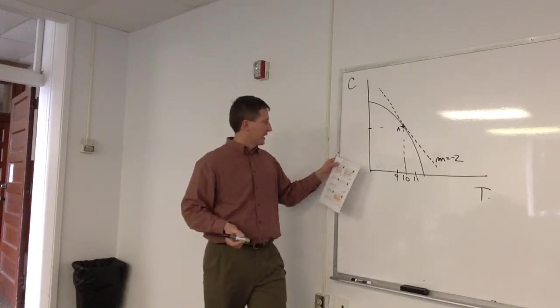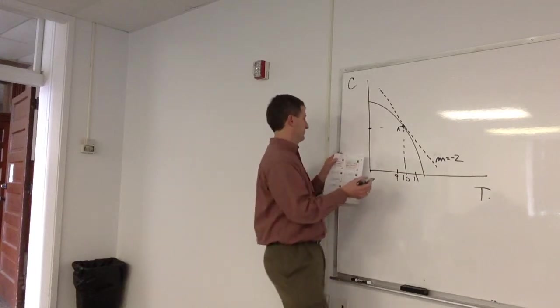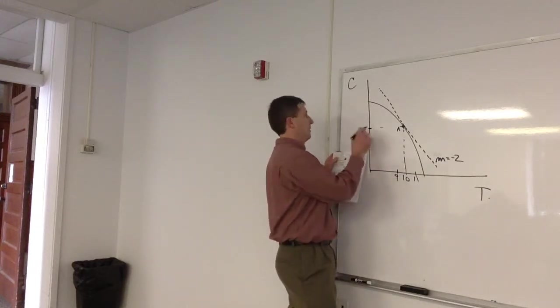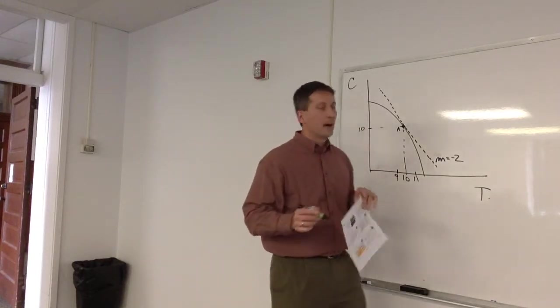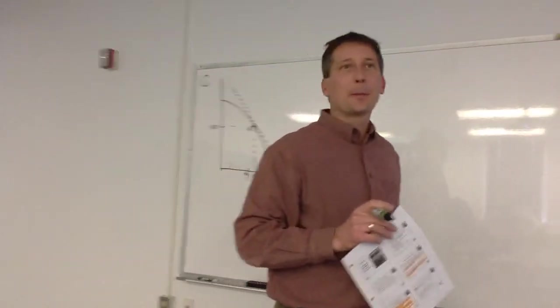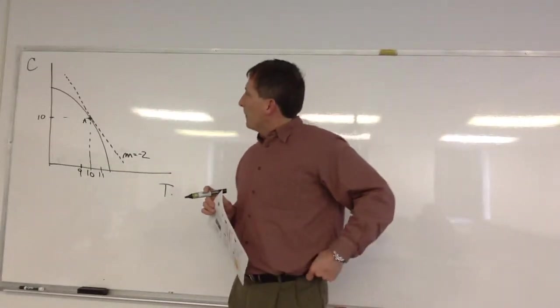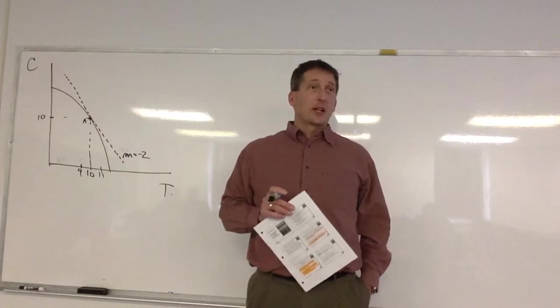The slope of this dashed line is negative 2. So let's start there for today. What does that mean? Yeah, what does that mean? Not necessarily, but it could be.